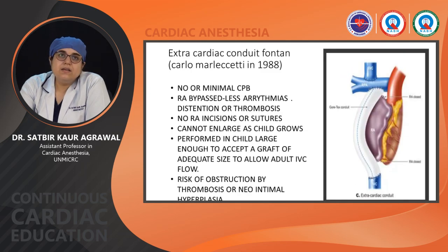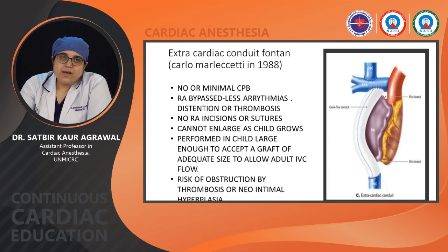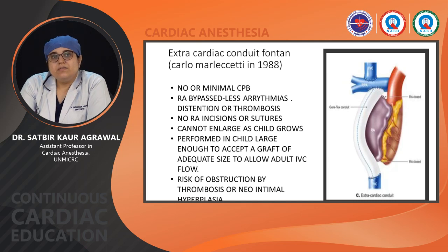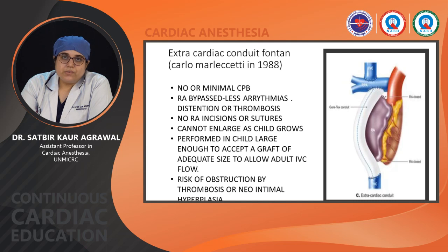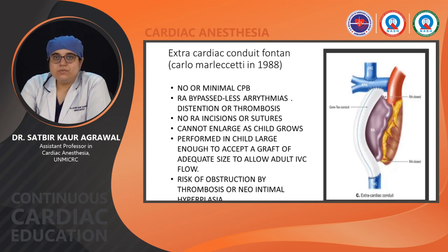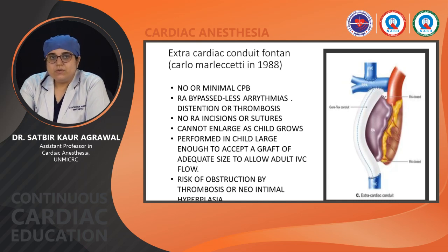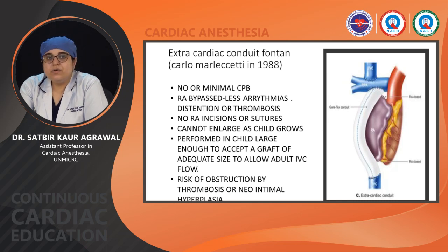In 1988, Carlo Marceletti introduced the extra cardiac conduit Fontan, which is the most commonly used today. The RA is completely bypassed, so there is less association with arrhythmias, distension, or thrombosis, and there are no RA incisions or sutures. It requires minimal CPB. However, it cannot enlarge as the child grows since a Gore-Tex conduit of around 20 mm is used — requiring the patient to be large enough before surgery. Because it is an extra cardiac conduit, there is always a risk of obstruction by thrombosis or neointimal hyperplasia.